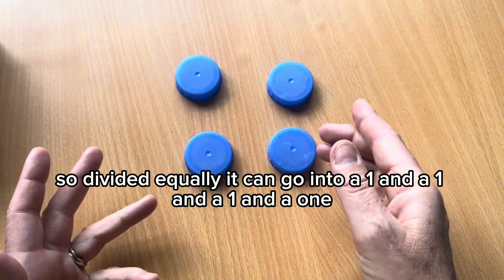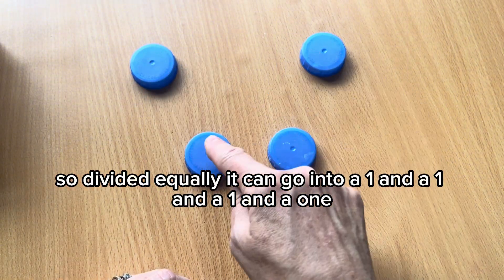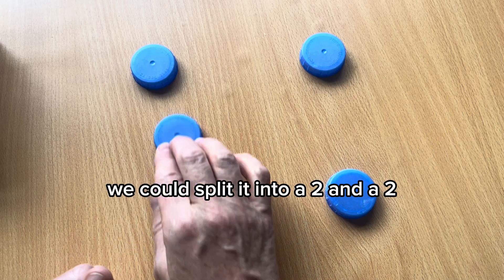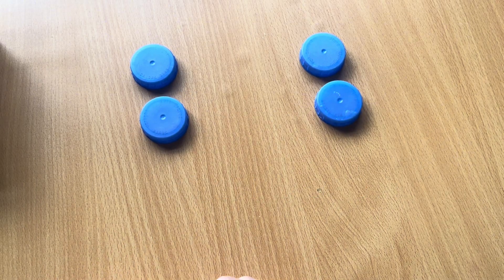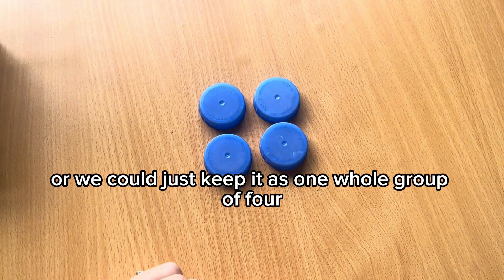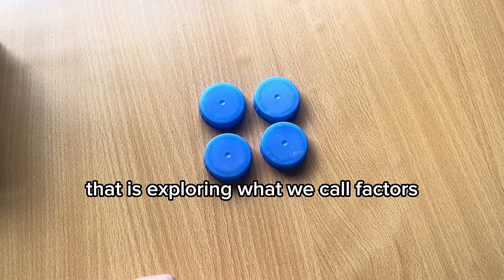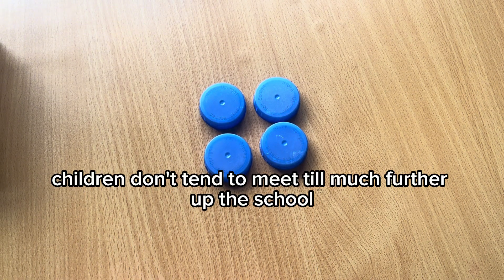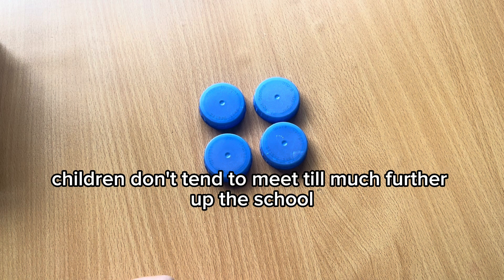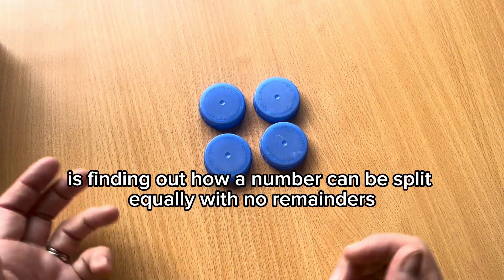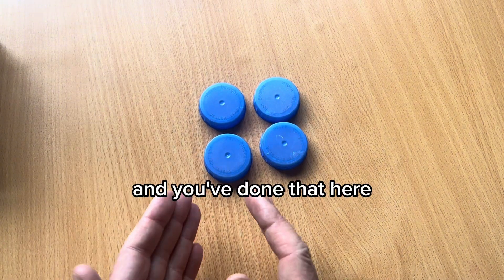So divided equally, it can go into a one and a one and a one and a one. So that's one of the ways it can be divided. We could split it into a two and a two, or we could just keep it as one whole group of four. That is exploring what we call factors. And it's something children don't tend to meet till much further up the school. But all factors mean is finding out how a number can be split equally with no remainders. And you've done that here.